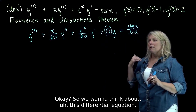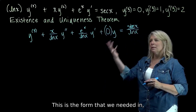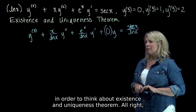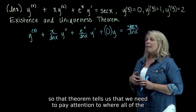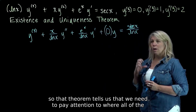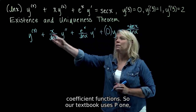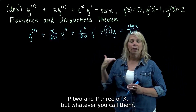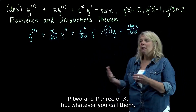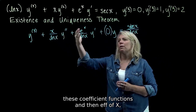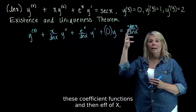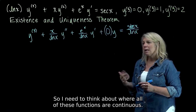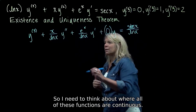This is the form we need the equation in to apply the existence and uniqueness theorem. That theorem tells us to pay attention to where all of the coefficient functions — our textbook calls them p1, p2, and p3 of x — and then f(x), the function on the right-hand side, are continuous.